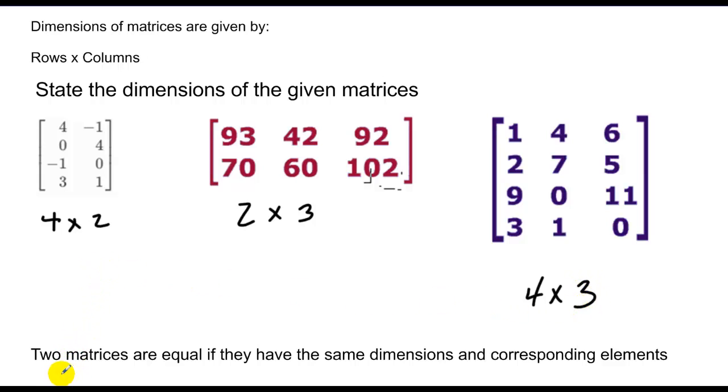By definition, two matrices are equal if they have the same dimensions and corresponding elements.